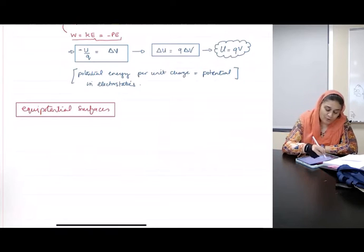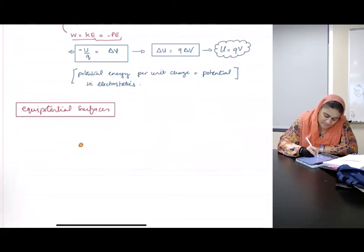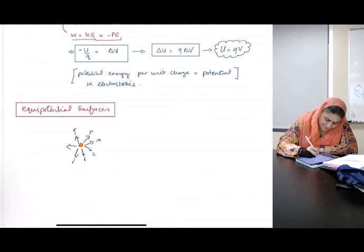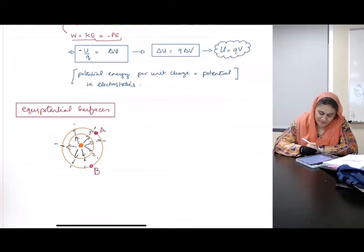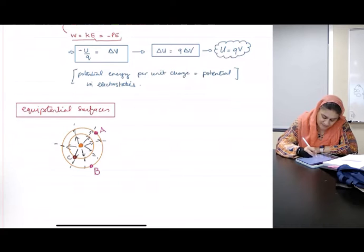Okay, so what are they given as? They are actually given as concentric circles around your fields. Suppose there was a point here, I will call it point A and point B, I will call it point B. And then I have another point, say C, and another point D here.